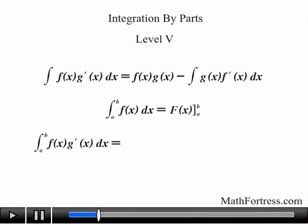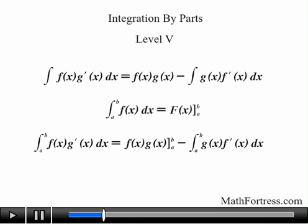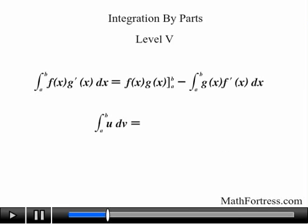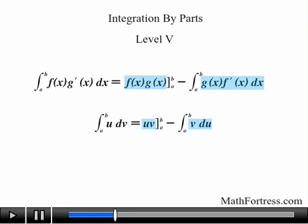The integral from a to b of f times g' dx is equal to f times g evaluated from a to b, minus the integral from a to b of g(x) times f' dx. Or written in another form: the integral from a to b of u dv equals u times v evaluated from a to b, minus the integral from a to b of v du. It's essentially the same idea — we find the antiderivative of a function and then evaluate it using the limits of integration.